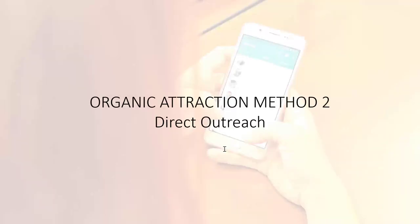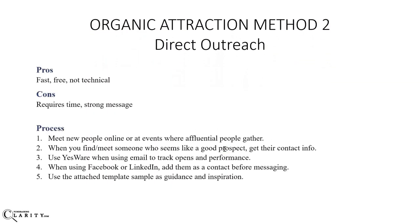Organic attraction method number two is direct outreach. Just like it sounds, direct outreach is simply contacting someone directly who you believe to be a good prospect for your cause. Outreach can be done by email, by phone, Facebook or LinkedIn, or even by letter in the mail. It's fast, it's free, it's not technical at all — this is old school nonprofit fundraising. It does require time and it requires that you already have a strong message. If you take time to make a call or send a letter and your messages are weak, it's going to be fruitless.